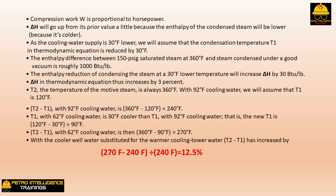Using the thermodynamic equation, compression work W is proportional to horsepower. ΔH will go up a little because the enthalpy of the condensed steam will be lower as the cooling water supply is 30°F lower. We assume that the condensation temperature T1 is reduced by 30°F. The enthalpy difference between 150 psig saturated steam at 360°F and steam condensed under a good vacuum is roughly 1,000 BTU/lb. Condensing the steam at 30°F lower temperature increases ΔH by 30 BTU/lb — a 3% increase.